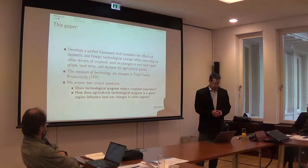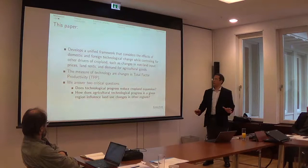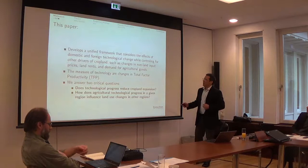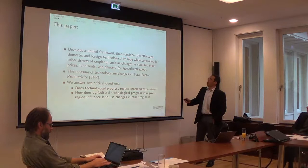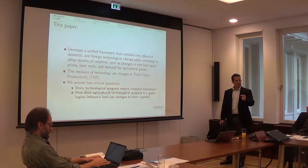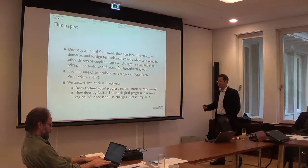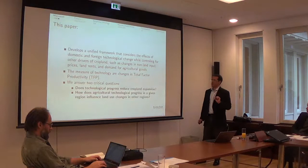So in this paper, what I do is develop a unified framework using an Armington trade model that basically treats the geography of trade explicitly, that's going to link foreign technological change to land use decisions in a cross-section of countries. I'm going to use total factor productivity as a measure of productivity that gives us the pure shift in the production function. And I answer two critical questions for this literature.